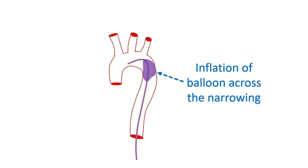High blood pressure, if present, will be treated with medications. But a significant narrowing of the aorta has to be corrected to prevent long-term damage. The narrowed region can be repaired by surgery. Enlarging the narrowed segment using a balloon catheter and implanting a stent is another option. Balloon catheters are small tubes with a sturdy balloon at the tip, introduced through the blood vessel of the groin. A balloon placed across the narrowed segment can be inflated to relieve the obstruction. A stent is a spring-like metallic device implanted after expanding the narrowed segment to prevent recoil.